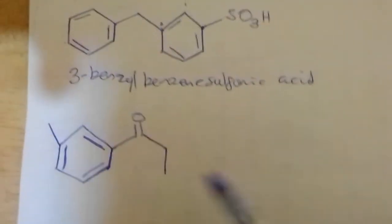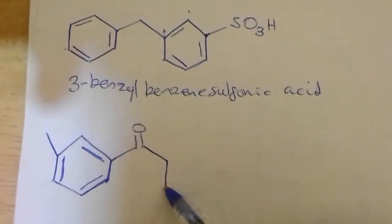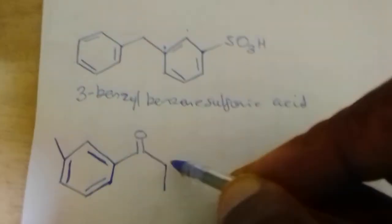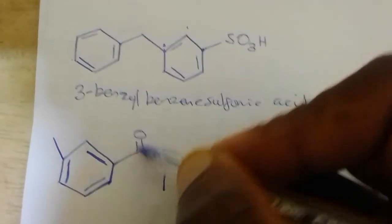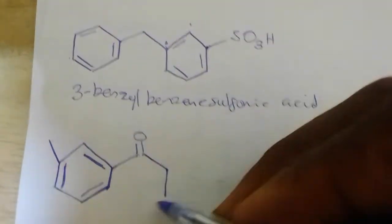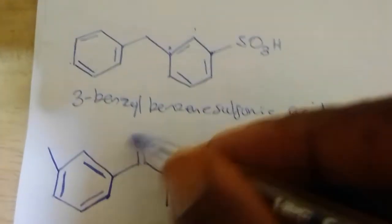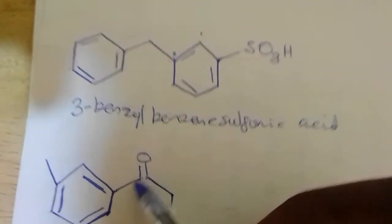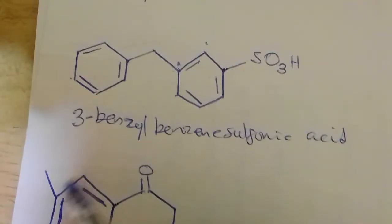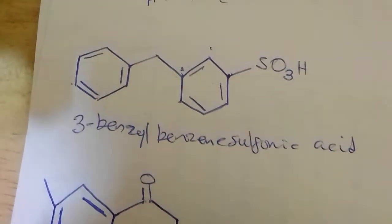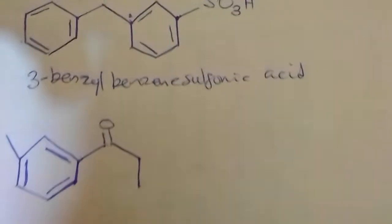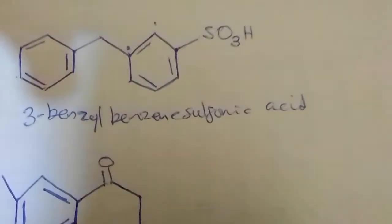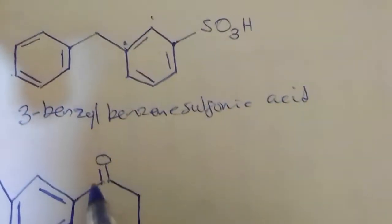Let's look at this one too. Here the parent structure is the one containing the functional group, which is the ketone. These three carbons are what contain the functional group ketone, which makes it a propanone. Now this benzene ring is bonded to carbon 1 of the propanone. This 1 is ortho with respect to the position of the whole structure on the propanone.